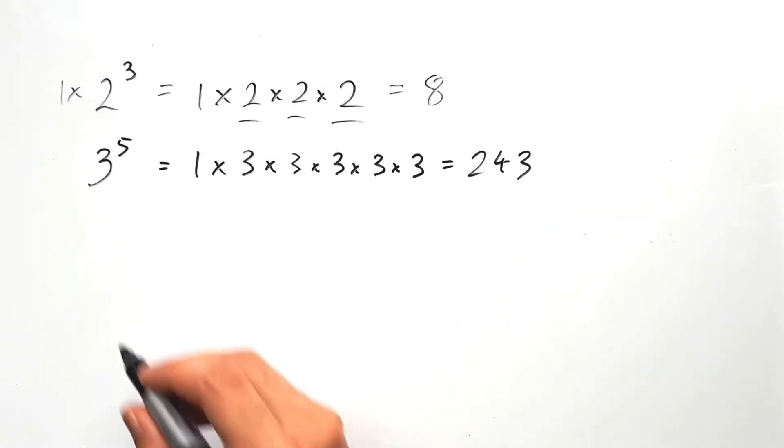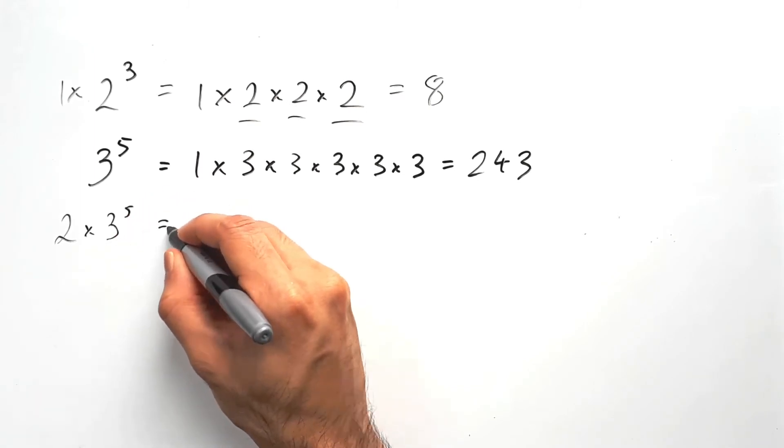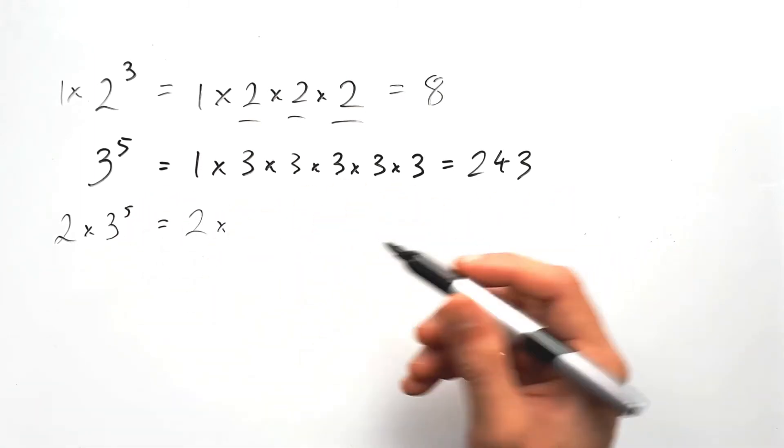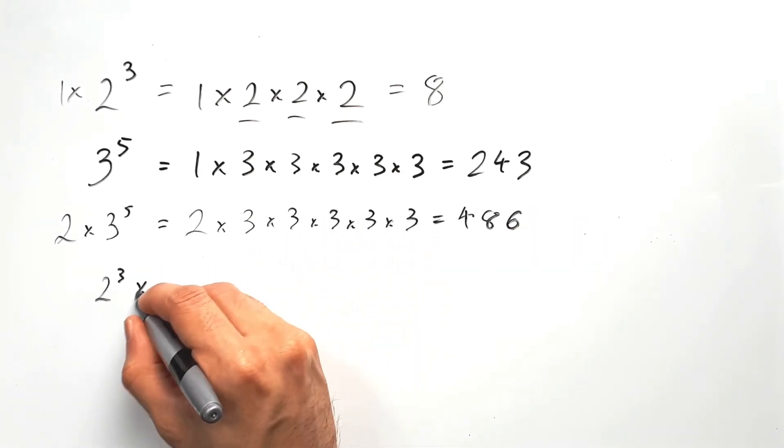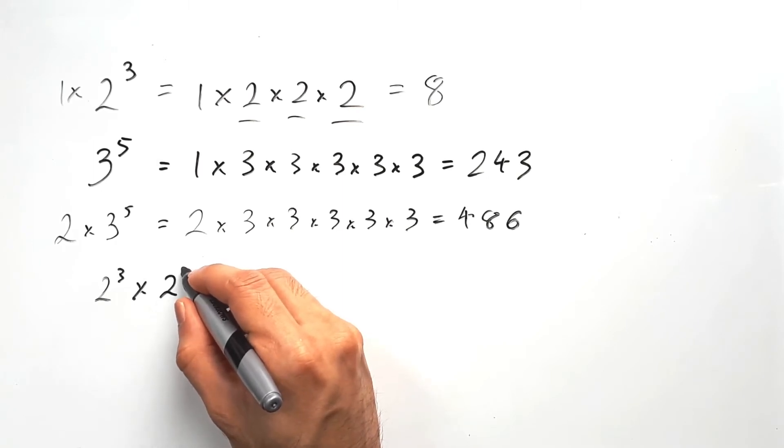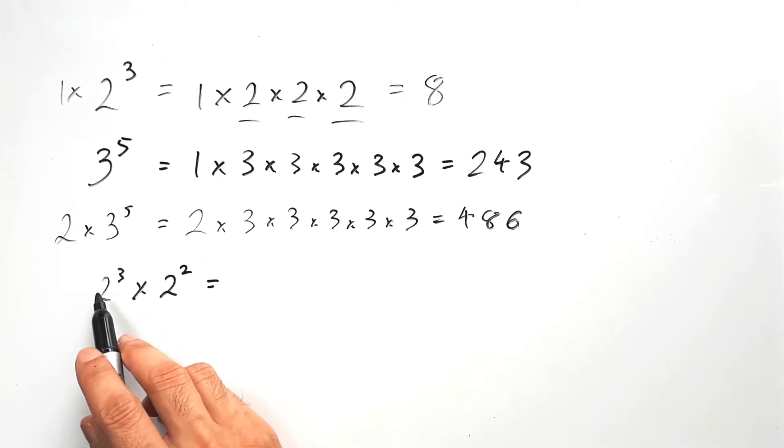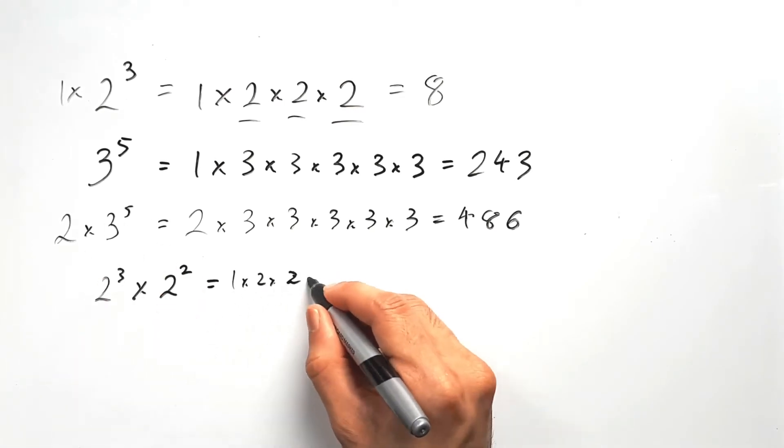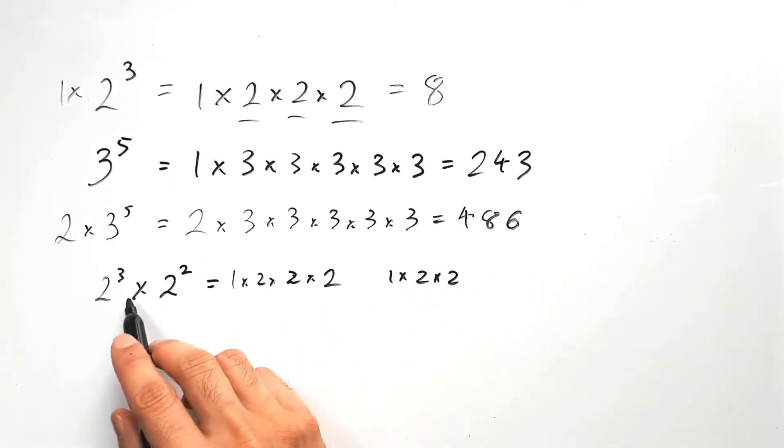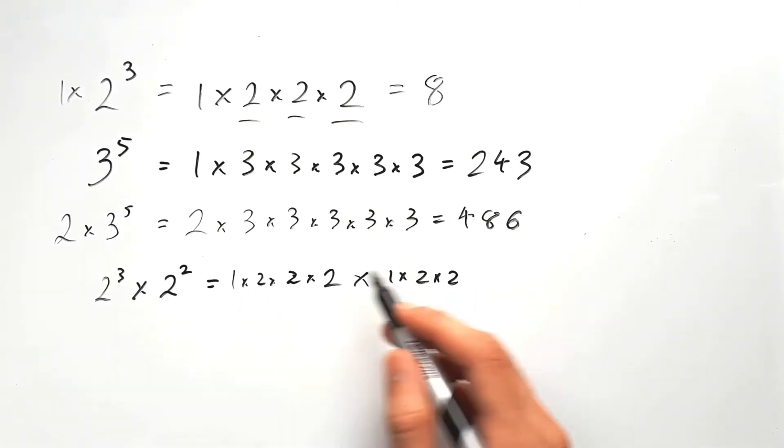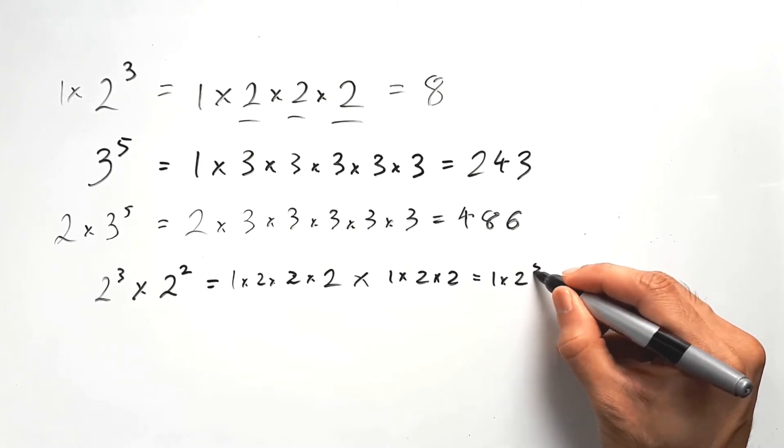And just to change things up a little bit, if I had a 2 multiplying 3 to the power of 5, then this would be 2 times 5 factors of 3. If 2 to the power of 3 multiplied 2 to the power of 2, this would indicate there are 3 factors of 2 multiplying by 1, and there are 2 factors of 2 multiplying by 1 as well. And they're multiplying each other. And the 1s are basically the same thing, so you're essentially taking 1 and multiplying 2 5 times.